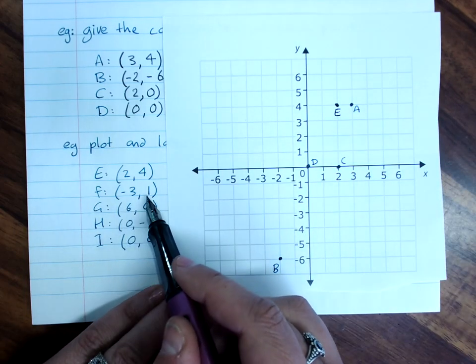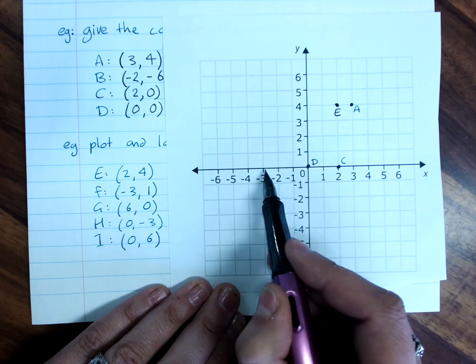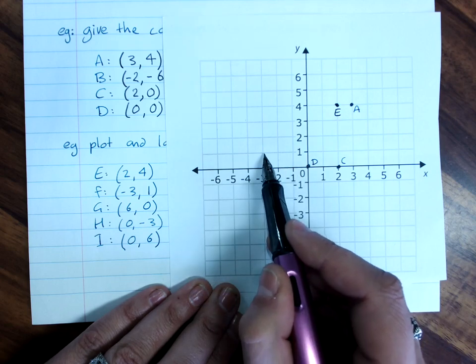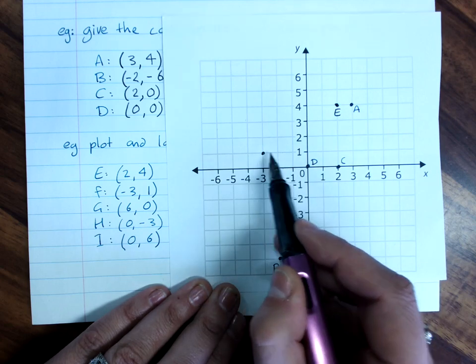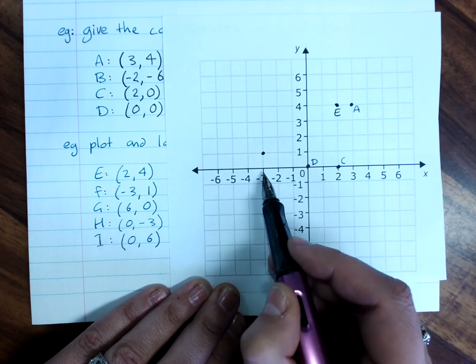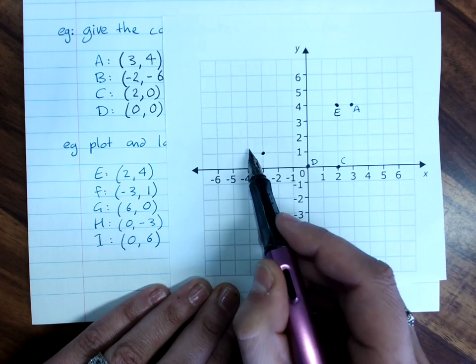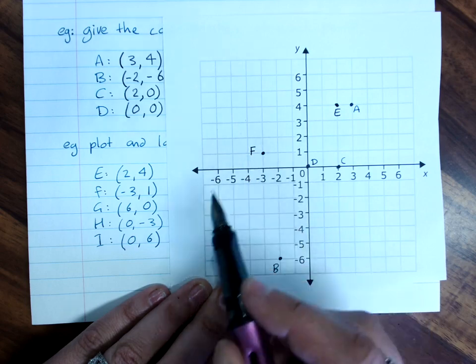F, negative three, one. I go to negative three on the x, and up to one on the y. So I'm in line with negative three on the x and one on the y. I plot the point, and I label it nearby.